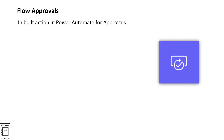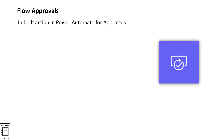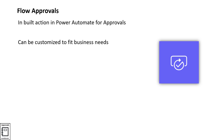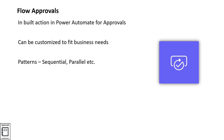The approval action in flow is a built-in action that you can leverage for approval scenarios. It can be customized to fit your business needs. You can define various patterns of approvals like sequential approvals, parallel approvals, and state machine approvals. Multiple approval type options are provided out of the box as part of this action.